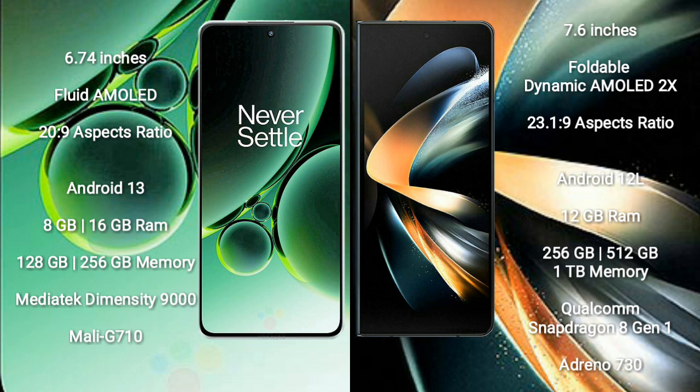OnePlus Nord 3 runs on the Android 13 operating system. Samsung Galaxy Z Fold 4 runs on the Android 12 operating system. OnePlus Nord 3 comes with 8GB or 16GB RAM and 128GB or 256GB internal storage.